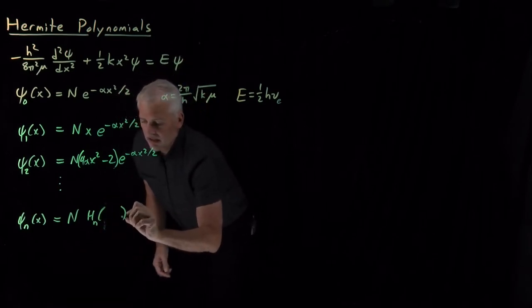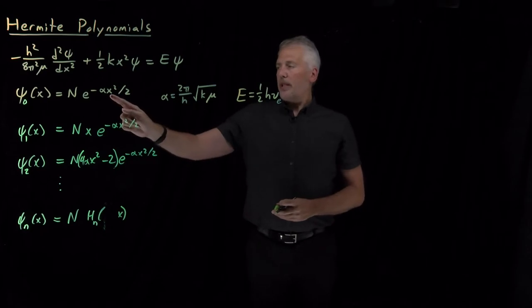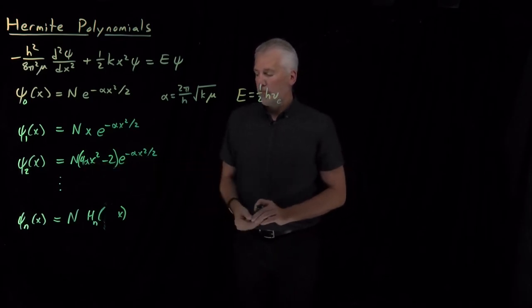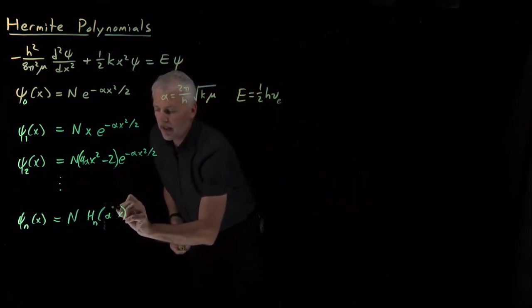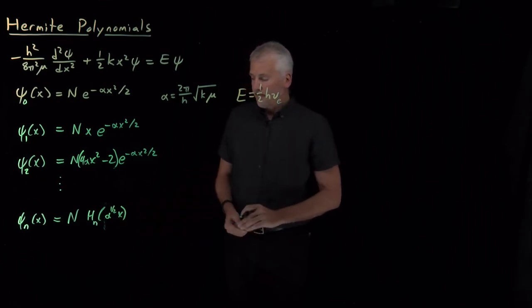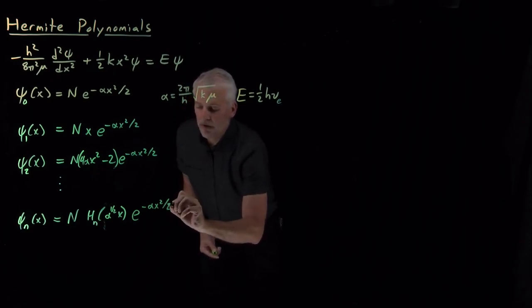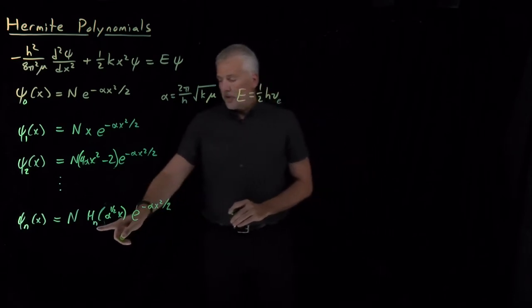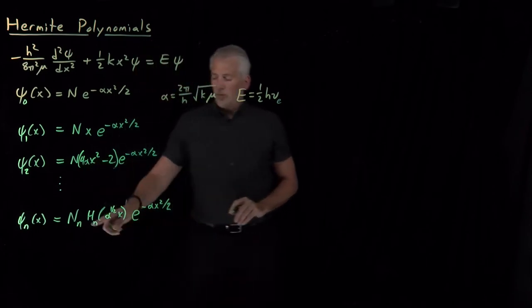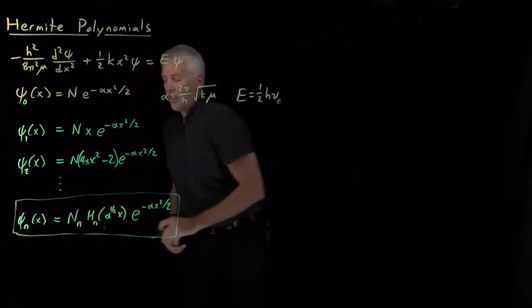That polynomial is not just a polynomial in x — every time we see an x, it's paired with some alpha. The x squared terms are paired with alpha, and every single x is paired with alpha to the one-half. So this polynomial is a function of alpha to the one-half times x, all multiplying the Gaussian term e to the minus alpha x squared over 2, which is the same for every solution. The polynomial term and the normalization constant will differ for each n. These are the general form of the solutions to the harmonic oscillator Schrödinger equation.